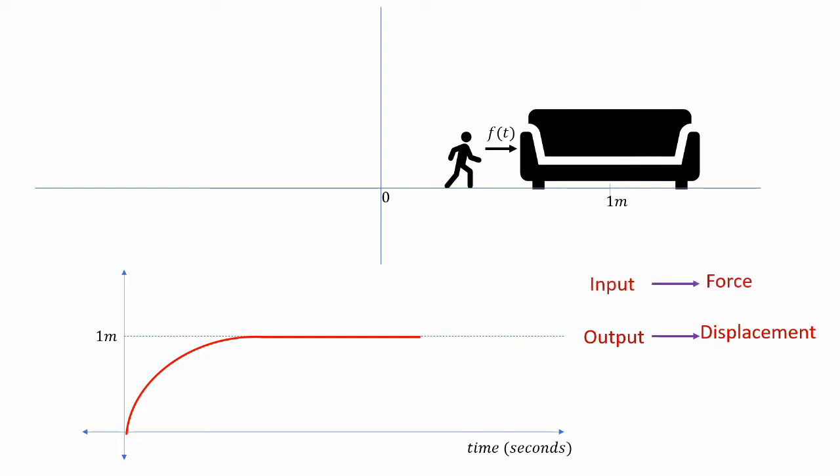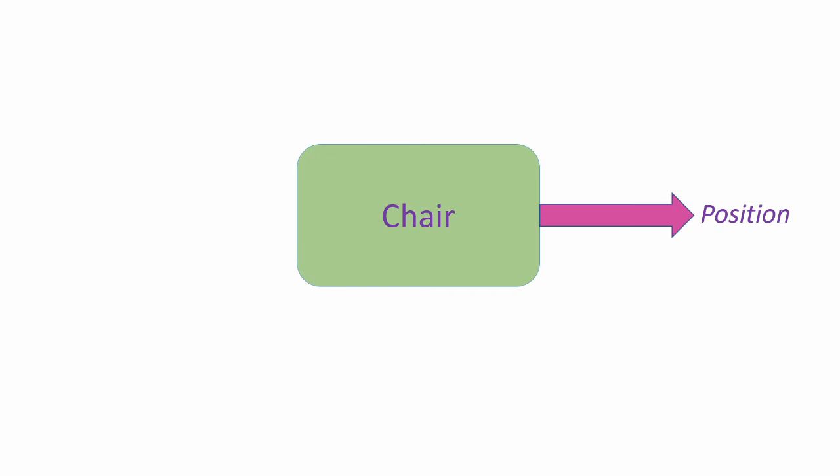We can consider the position or displacement as the output variable and force as the input variable. So the output variable is the variable that needs to be controlled — in this case, the position of the chair. The input variable given to the system is used to control it — in this case, the force. This process can be represented by a block diagram where the block represents the chair, the output is the position, and the controlling variable is the force given as the input.